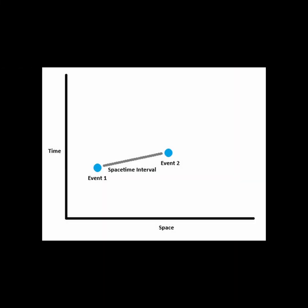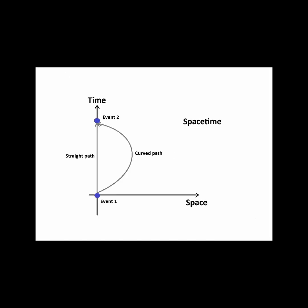A world line doesn't have to pass through two events in a straight path through space-time. It can take a curved path. What does that mean for the distance traveled through space-time?